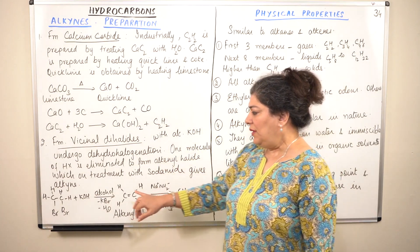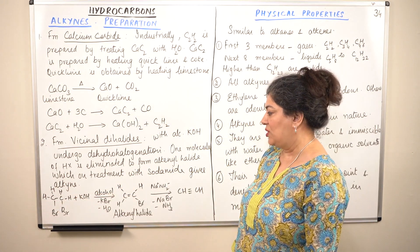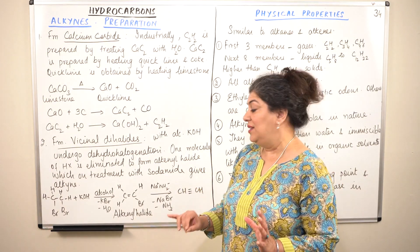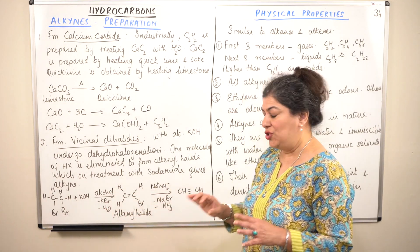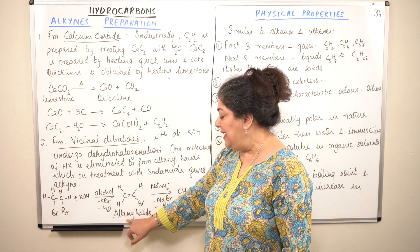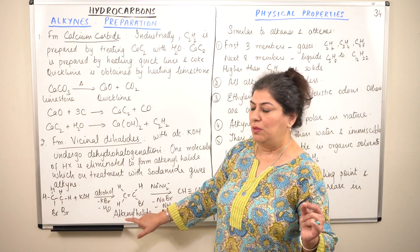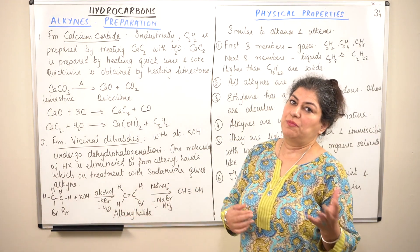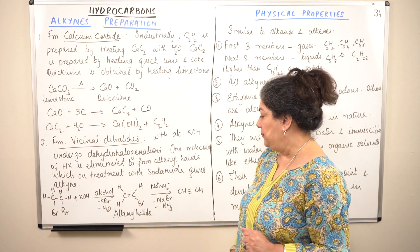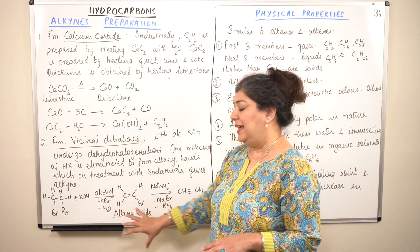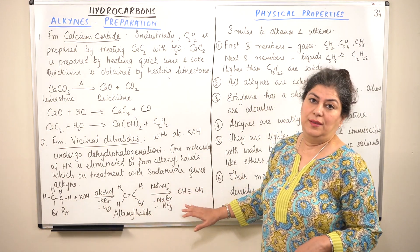When you have a vicinal dihalide and make it react with alcoholic potassium hydroxide, it results in the formation of an alkenyl halide. Alkenyl means it has a double bond — it is an alkene substituted by a halogen, so it is an alkenyl halide. When this alkenyl halide is made to react with sodamide, it gives you the alkyne.